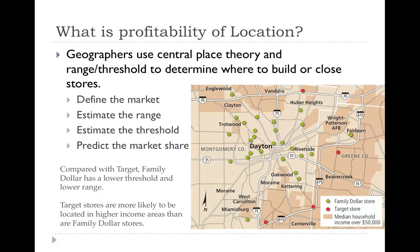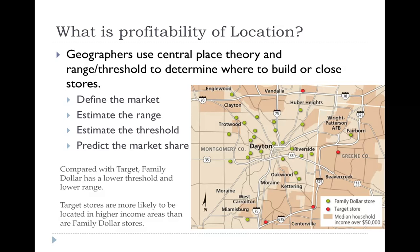Alongside Central Place Theory is the concept of profitability of location. Geographers use range and threshold to determine where to build a store. All businesses define their market, estimate the range and threshold, and predict overall market share. For example, comparing Target stores to Family Dollar stores in Dayton, Ohio: Target locates in higher-income areas with a larger threshold and range, while Family Dollar stores are more numerous and located in lower-income areas than Target's median household income zones.